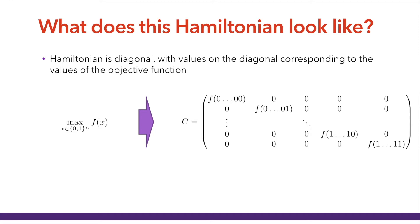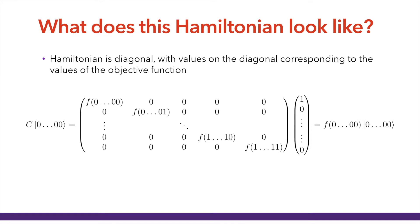If we have a problem — say maximize f(x) — and x takes all values on the n-dimensional Boolean cube, then our Hamiltonian has on its diagonal the value of function f on 000...0, 000...1, and so on, until f of 111...1. Note that it is a 2^n by 2^n operator. If you apply it to the computational basis state with all zeros, that state has exactly one non-zero amplitude in the first element of the vector, and multiplying gives back a factor equal to the value of the function on that binary string.